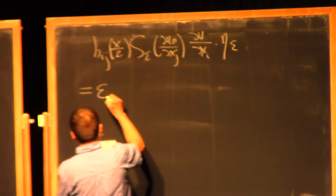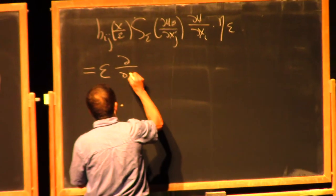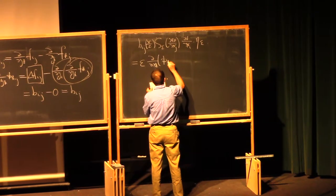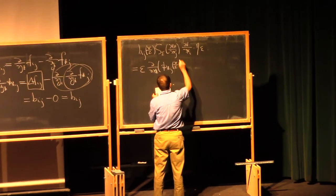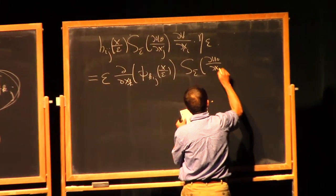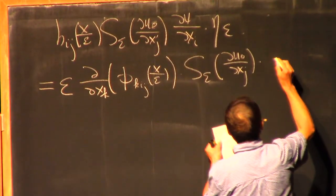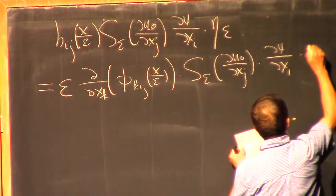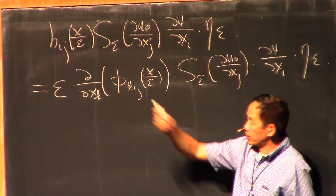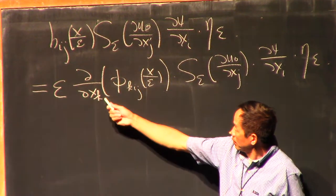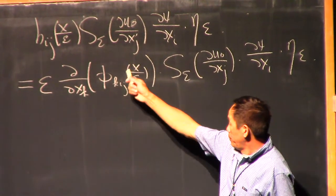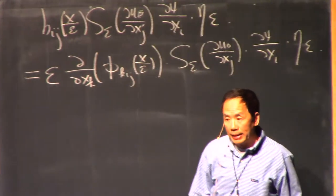We're going to write this as epsilon times the derivative of the flux corrector K_ij of x over epsilon, times S_ε times du0/dxj and d psi/dxi times the cutoff. That's one of the properties of the flux corrector — we're taking the derivative of K. When you take a derivative, there will be an epsilon in the denominator, so we need an epsilon here to cancel it out.